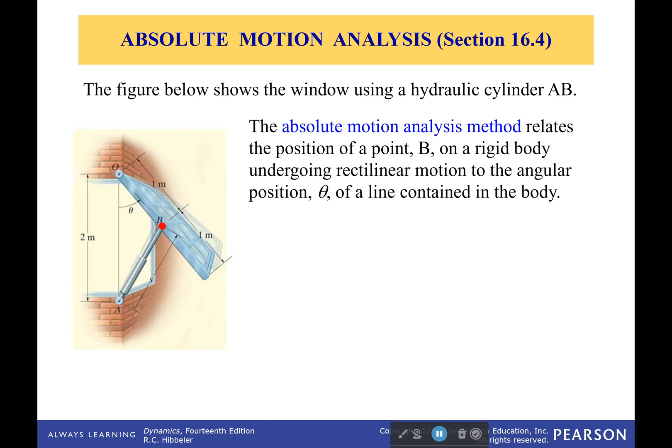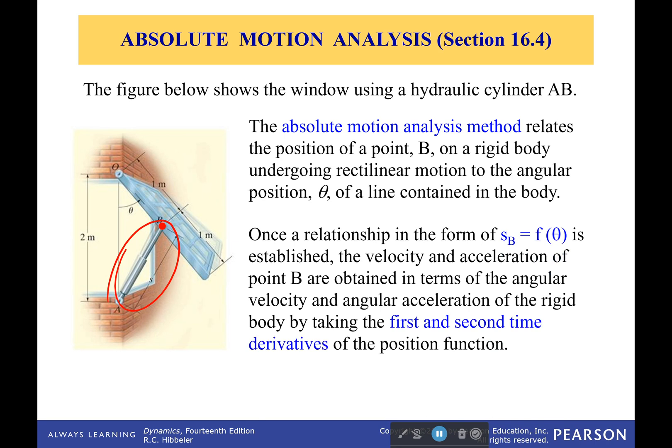Okay, so back to our window. We're going to develop an absolute motion analysis method. And so what we're going to do in this case is we're going to say, okay, that point B on a rigid body is undergoing rectilinear motion because of this cylinder right here that is causing it to translate. Now, as soon as we can figure out a relationship such that says okay, that position B measured from point A is going to be a function of theta, we can then figure out the velocity and acceleration at point B in terms of the angular velocity and angular acceleration using our time derivatives. So first step: make this function. Second step: take some derivatives.